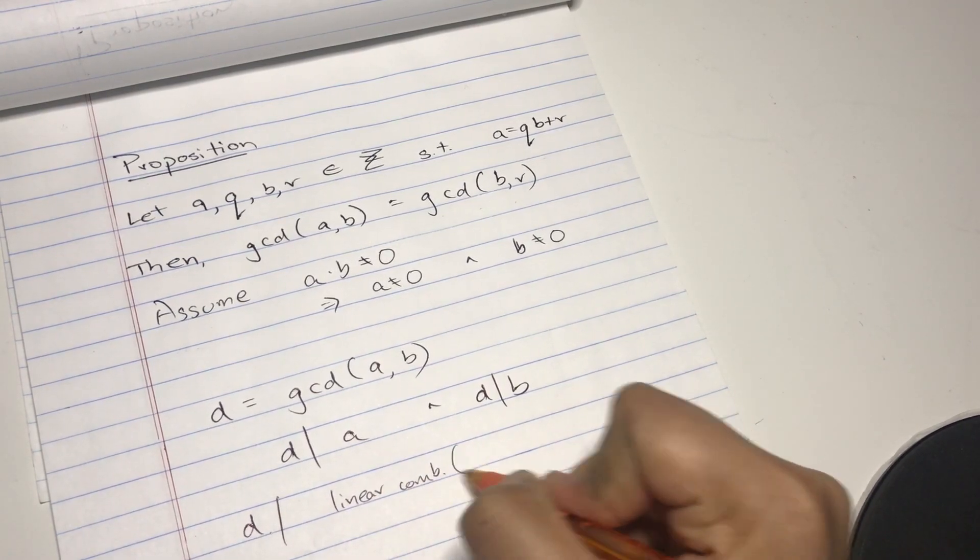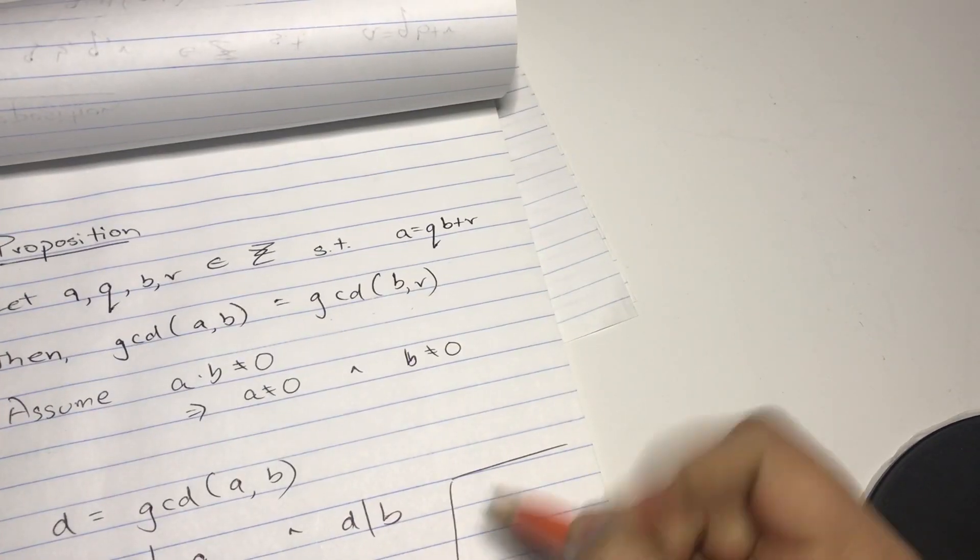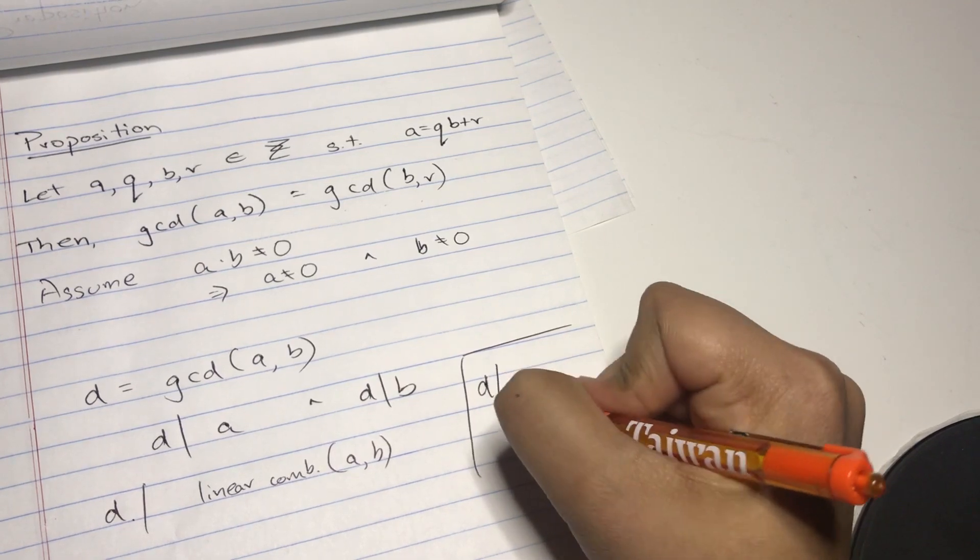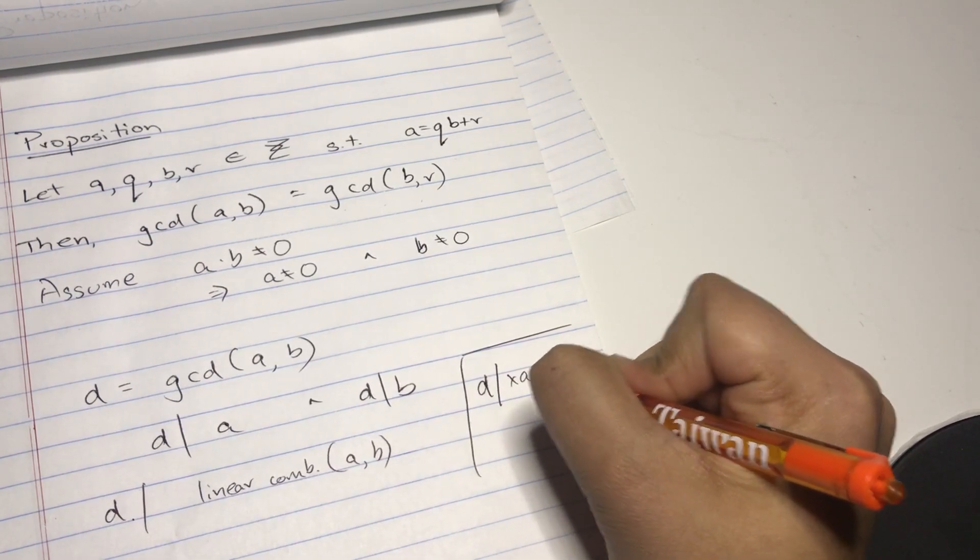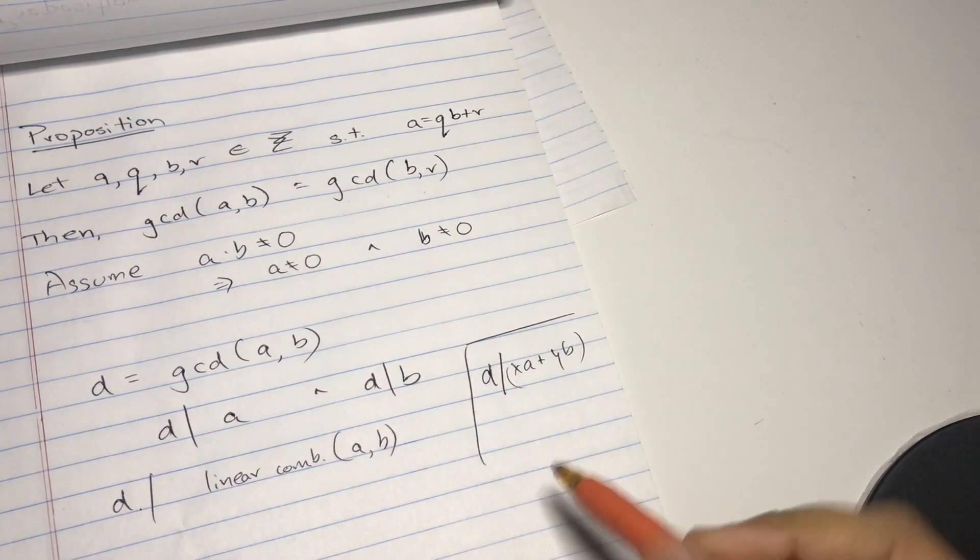Linear combination of a comma b. Now this is the truth. This actually just means, I'm going to write down over here, d divides any xa plus yb.